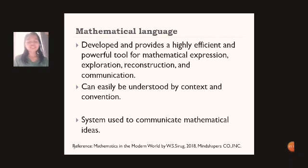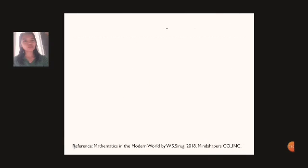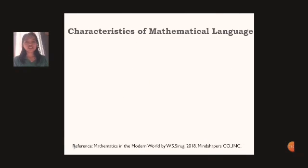Mathematical language is also the system used to communicate mathematical ideas. So to fully understand mathematical language, let us check into the characteristics of mathematical language. We have three under this. We have precise, in which it's a culture of being correct all the time.